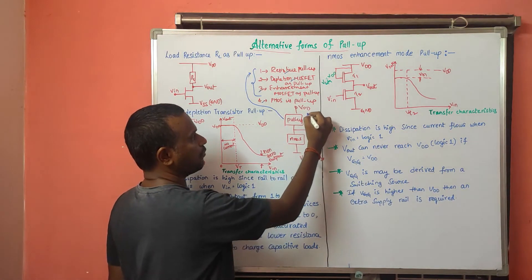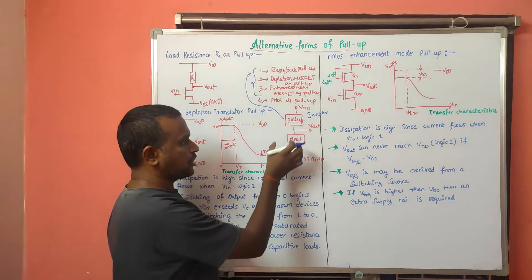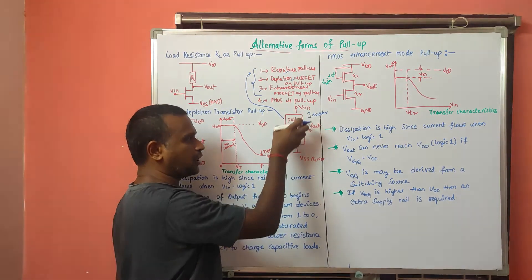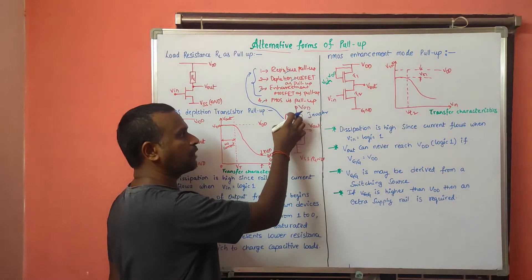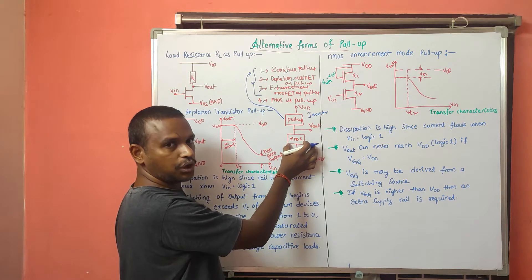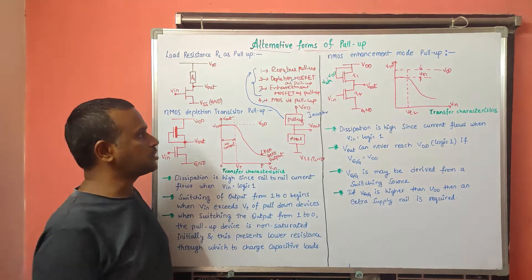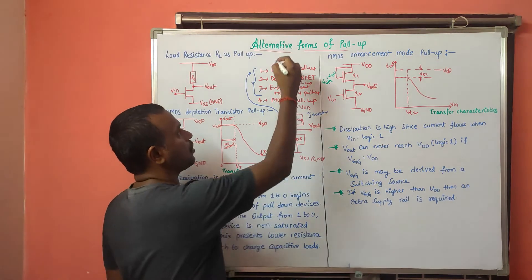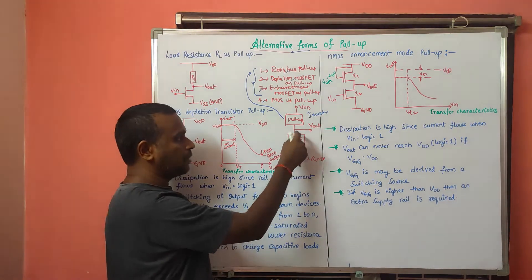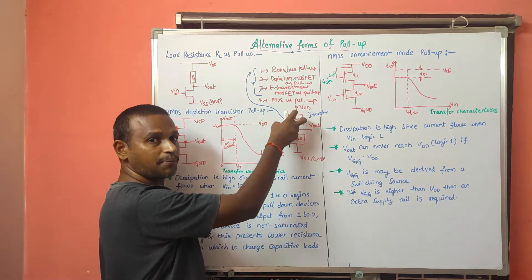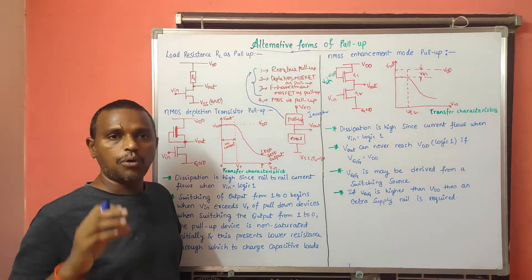So this pull-up transistor will be of these four types. We can use any of these four — in place of pull-up we can use resistive load, or depletion MOSFET as pull-up, or enhancement MOSFET as pull-up, or P-MOS transistor as pull-up. The inverter circuit consists of a pull-down network and pull-up network. The N-MOS pull-down is always the same, but the pull-up circuit will vary — this is of four types.